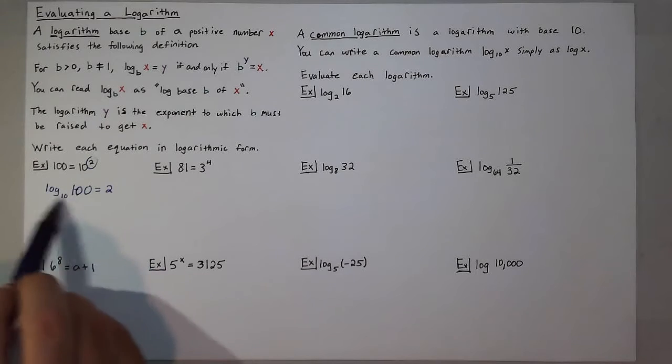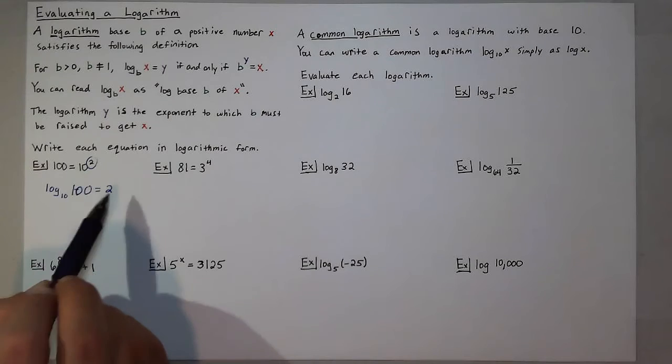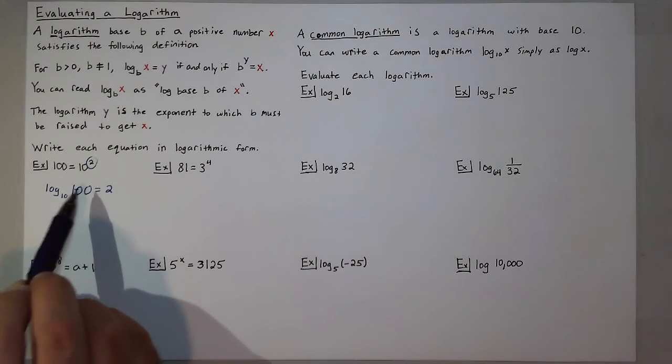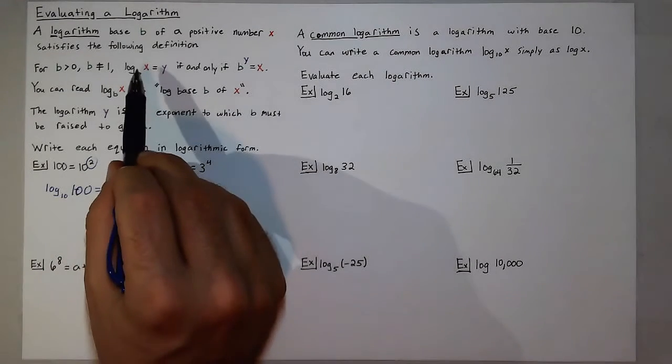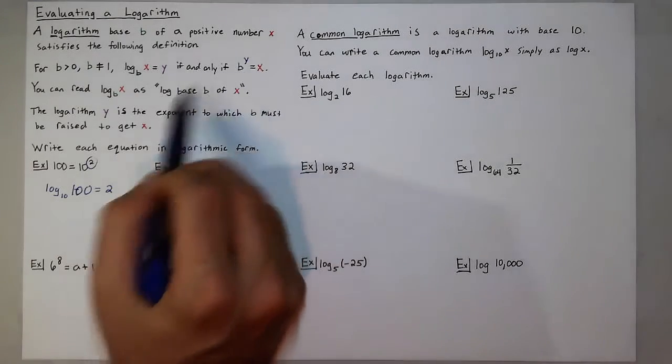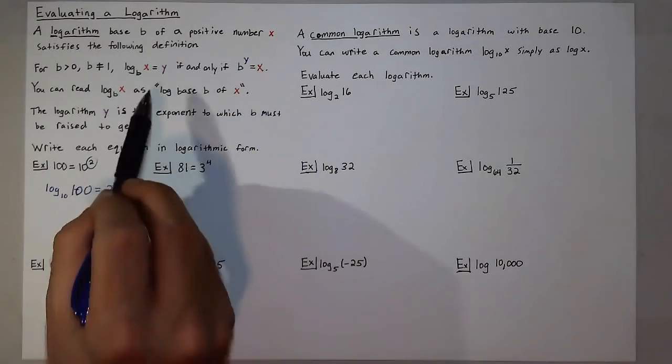Because the logarithm is equal to the exponent, and the base of your logarithm is the number being raised to that exponent to get the inside number. You can also see here that we had b, which was 10. We put that in the base of our log.